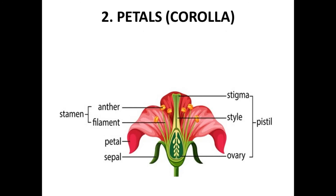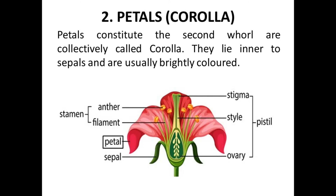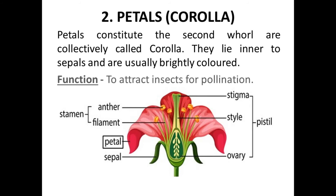The second part of the flower is petals, or corolla. Petals constitute the second whorl and are collectively called corolla. Inside the sepals are brightly colored leaves of different colors — blue, purple, red, yellow, orange — in different flowers. Why are they brightly colored? Because their function is to attract insects for pollination. Insects are attracted by their bright colors. Pollination is the main first step in the process of fertilization and sexual reproduction.